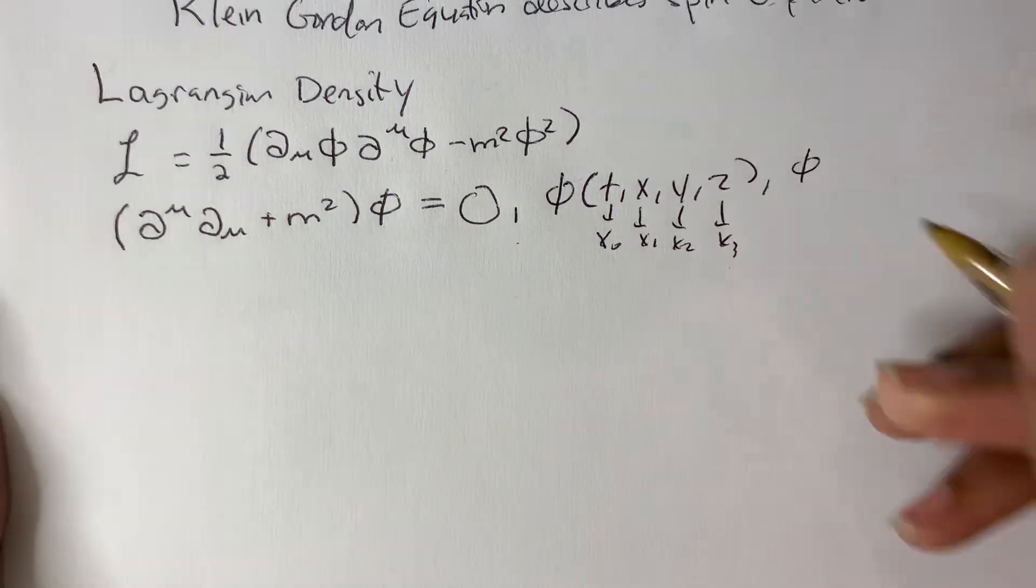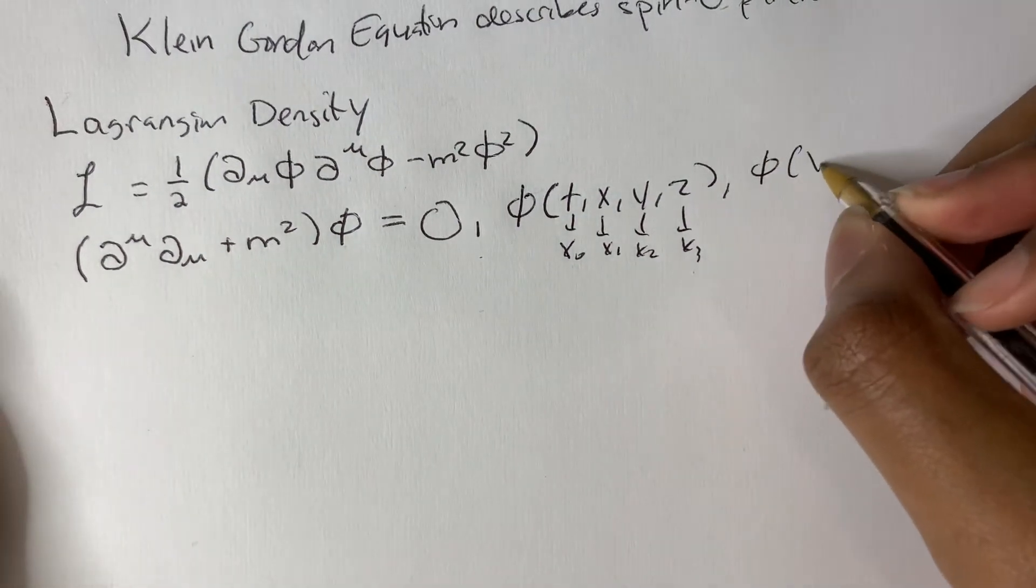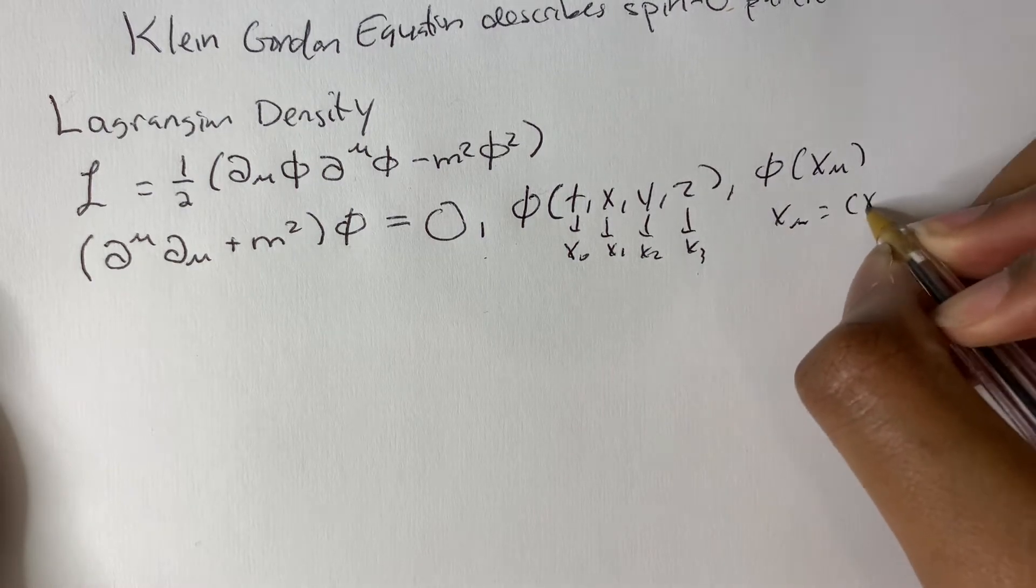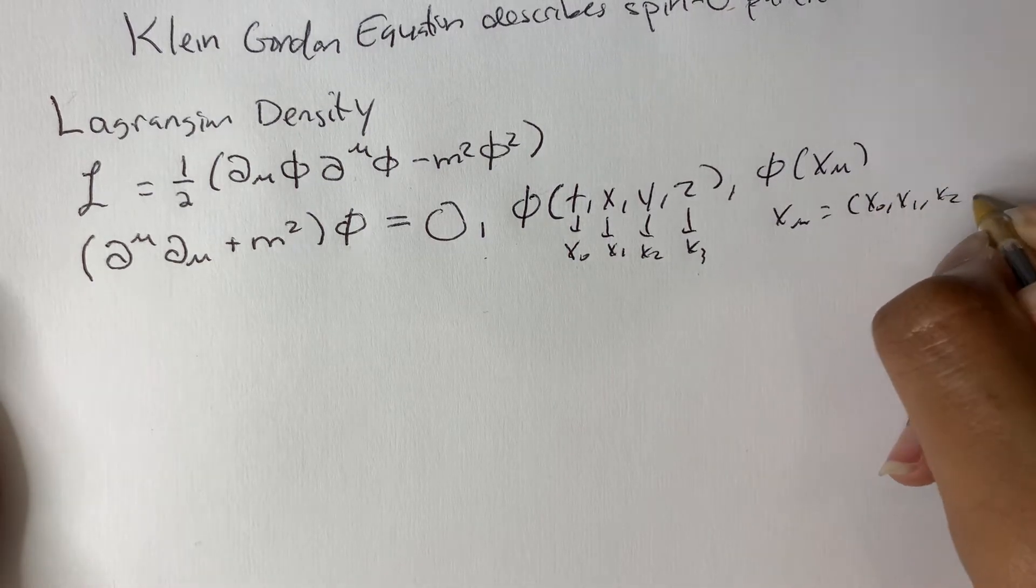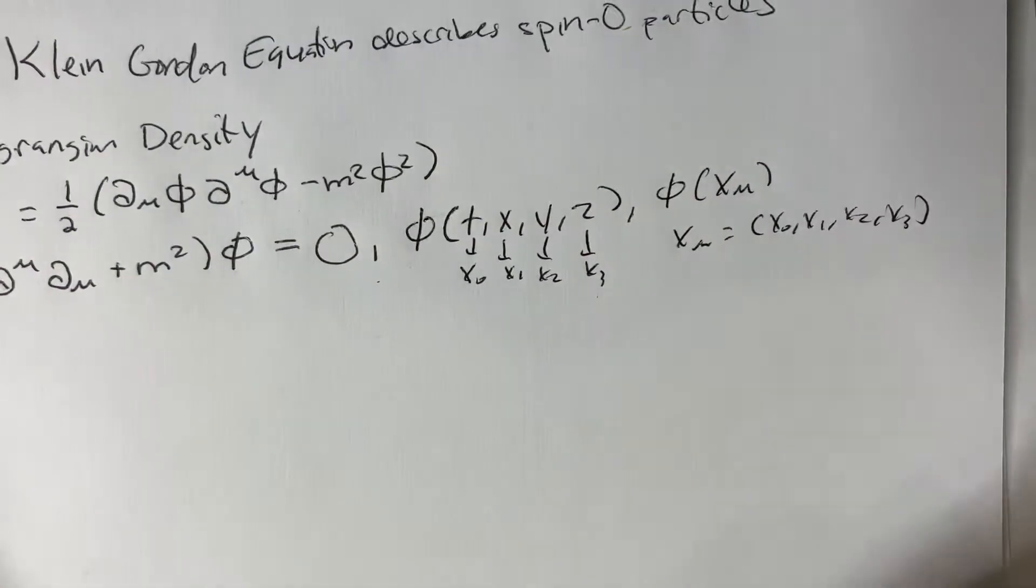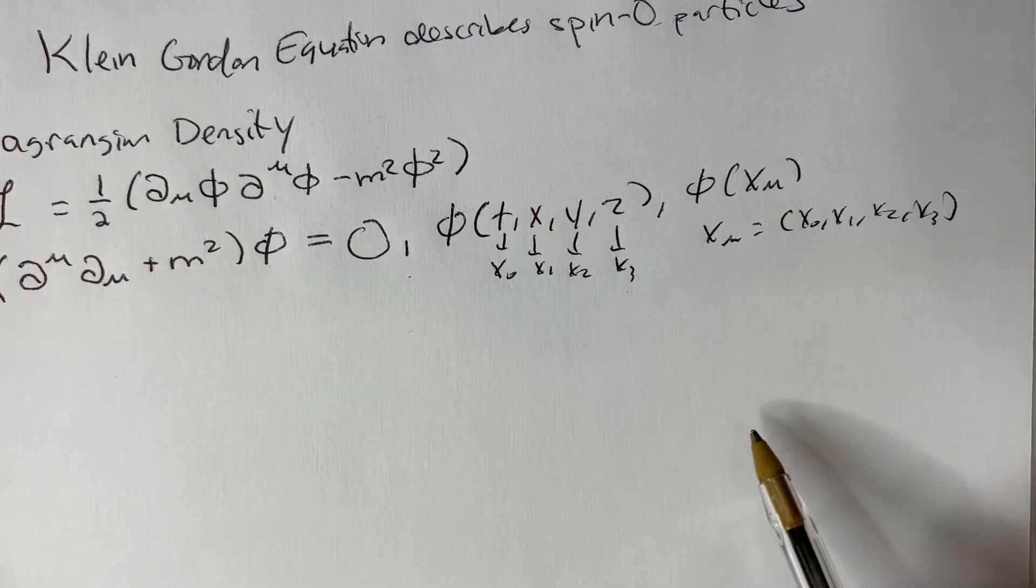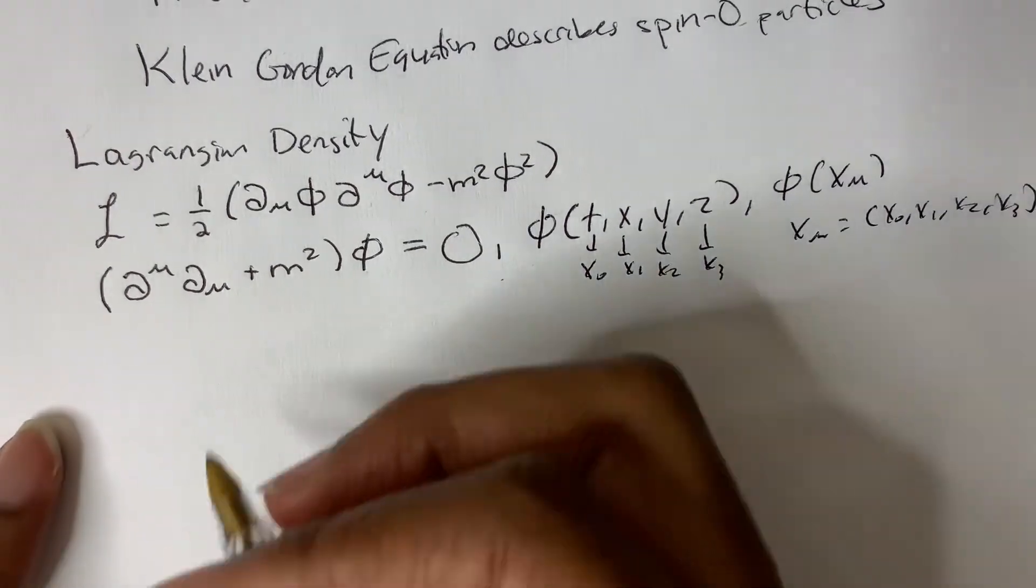But what I'm going to do is we are going to relabel these as x0, x1, x2, and x3. So then, we can just say this is phi of x mu, where x mu is just x0, x1, x2, x3. It's just to make this thing a bit faster. This is the standard notation that you'd find in textbooks.